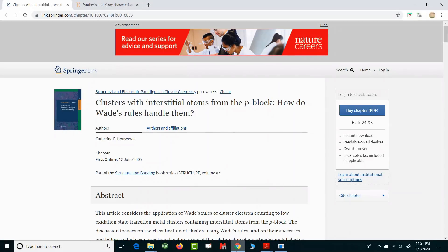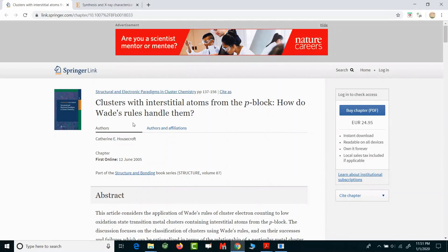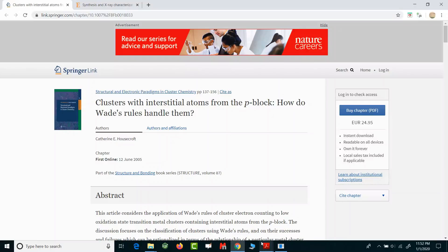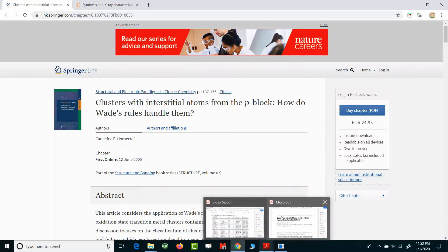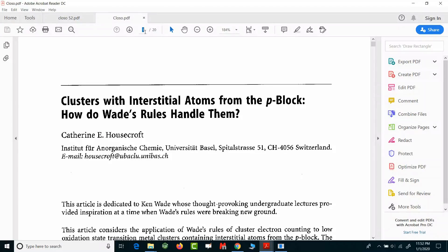How can you see these reference articles? I'll show it to you on Chrome. This is the Springer article, 'Clusters with Interstitial Atoms from P Block: How Do Wade's Rules Handle Them?' written by Kathleen Housecraft in 2005. You can cite this particular article. I'll tell you the page number. If you go to page number 11 or 12...